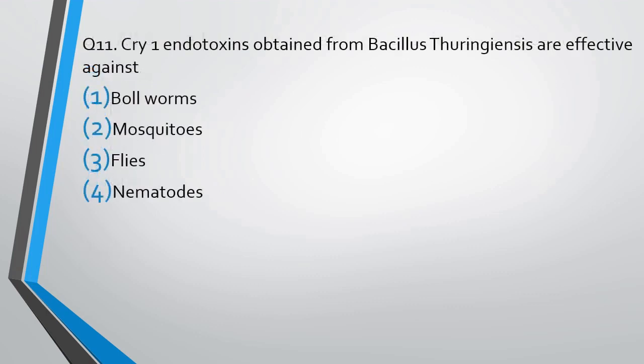Question number 11. Cry 1 endotoxins produced by Bacillus thuringiensis are effective against: (A) Bollworm, (B) Mosquitoes, (C) Flies, or (D) Nematodes. The correct answer is option A — they are effective against bollworms and are used in the production of resistant cotton.